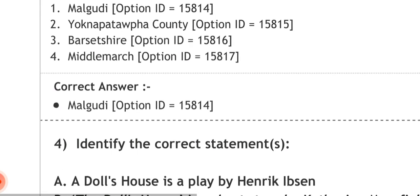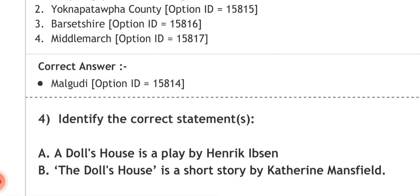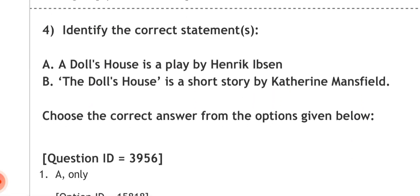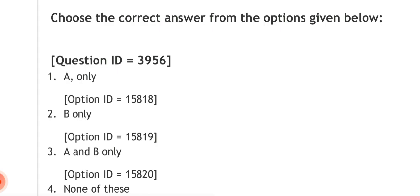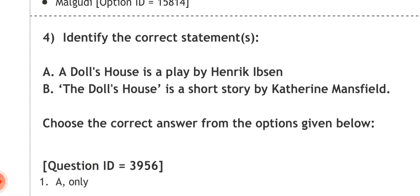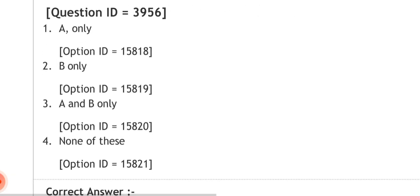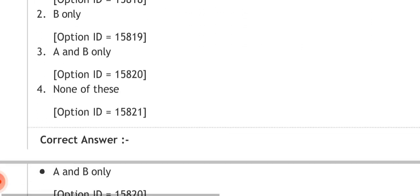Question four: identify the correct statement. A — A Doll's House is a play by Henrik Ibsen. B — The Doll's House is a short story by Katherine Mansfield. Options: A only, B only, A and B only, or none of these. The correct answer is A and B only — option three — meaning both statements are correct.